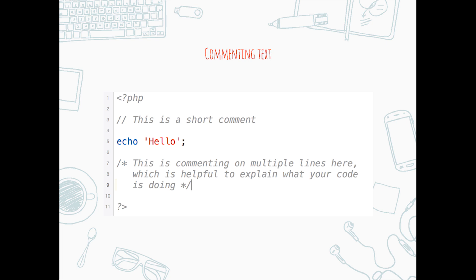Commenting text: comments will not render as code, and only serve the purpose of documentation. These are the two most common ways of commenting code. The double slash is for a one-line comment, and the slash and asterisk is good for multiple lines of commenting. There is a third option — using the pound sign as another alternative for a one-line comment, which was actually adopted from another programming language.